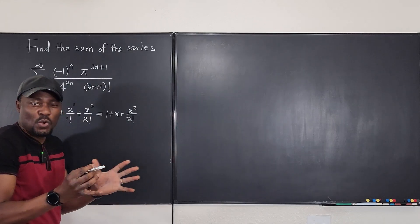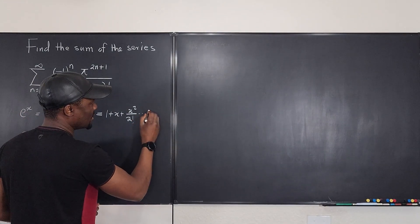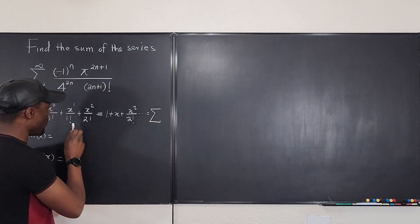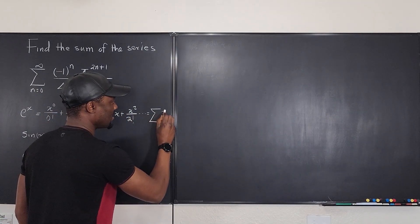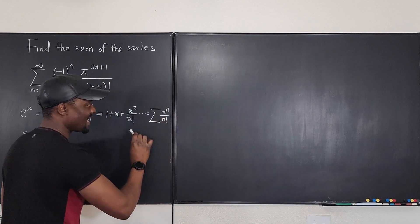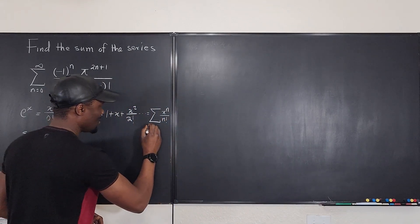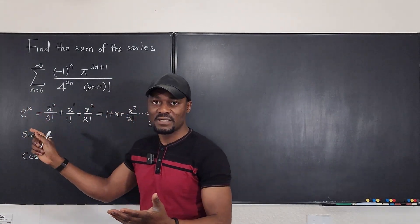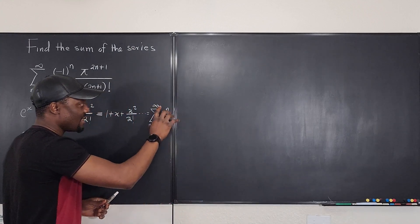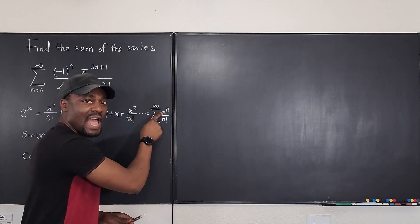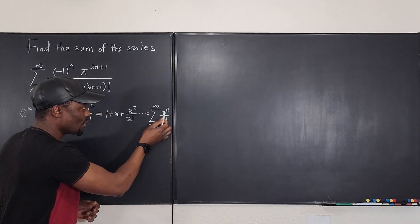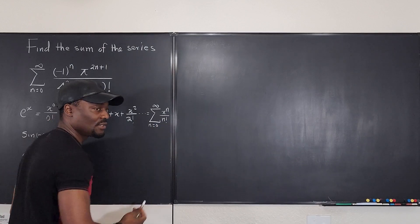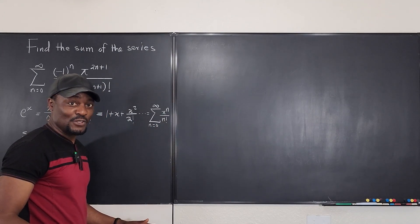In compact form, the Taylor series for e to the x is the sum from n equals zero to infinity of x to the n over n factorial. If the problem replaces x with 2, then e squared equals the sum of 2 to the n over n factorial. You apply the same substitution idea when dealing with sine of x.